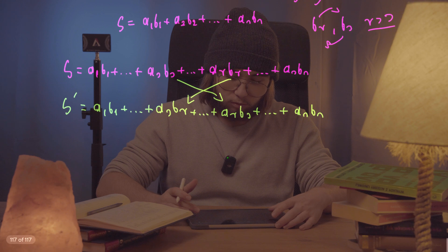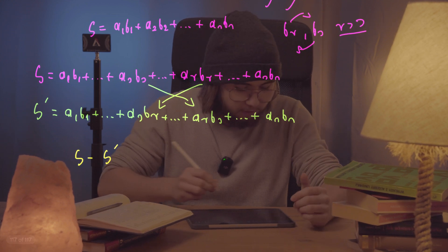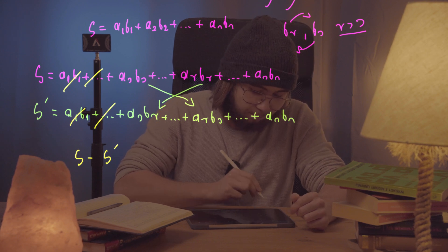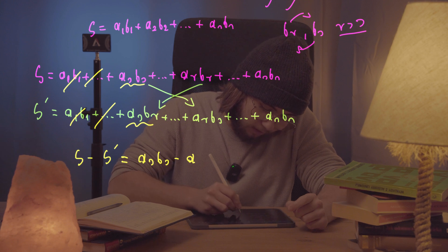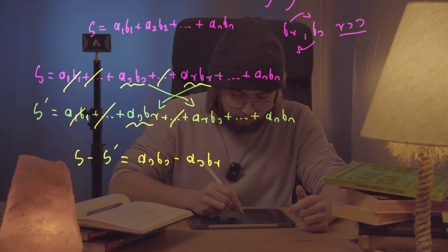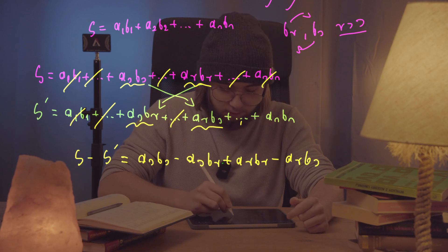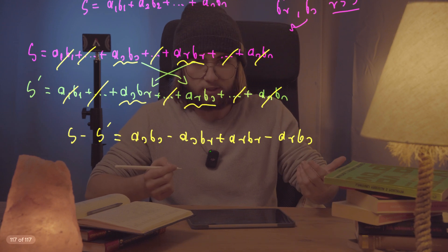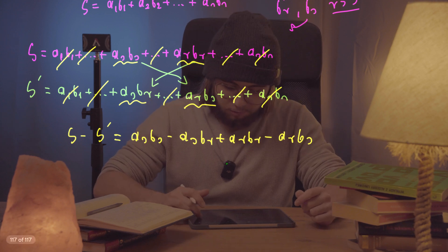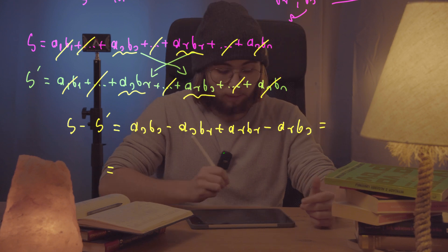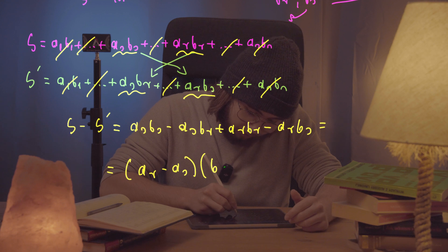But now if we subtract S' from S, what do we get? Well, A₁B₁ would cancel out, and actually everything cancels out except AₛBₛ and Aₛ·Bᵣ, and AᵣBᵣ and Aᵣ·Bₛ. So we get: S - S' = AₛBₛ - AₛBᵣ + AᵣBᵣ - AᵣBₛ, which we can rewrite nicely as (Aᵣ - Aₛ)(Bᵣ - Bₛ).